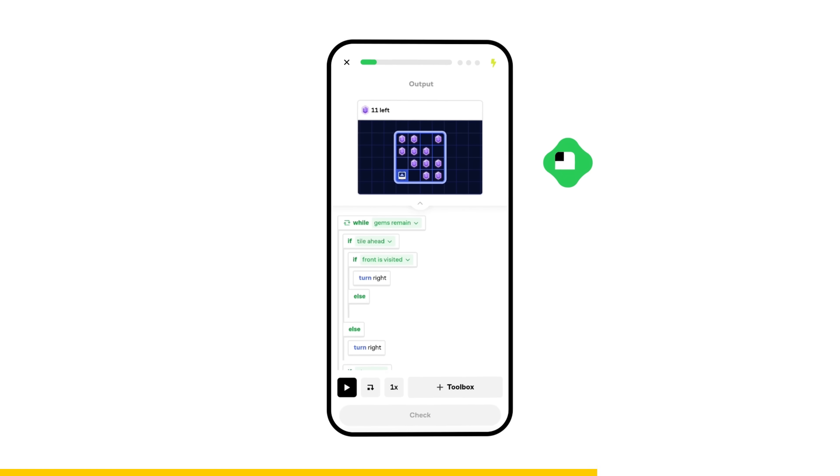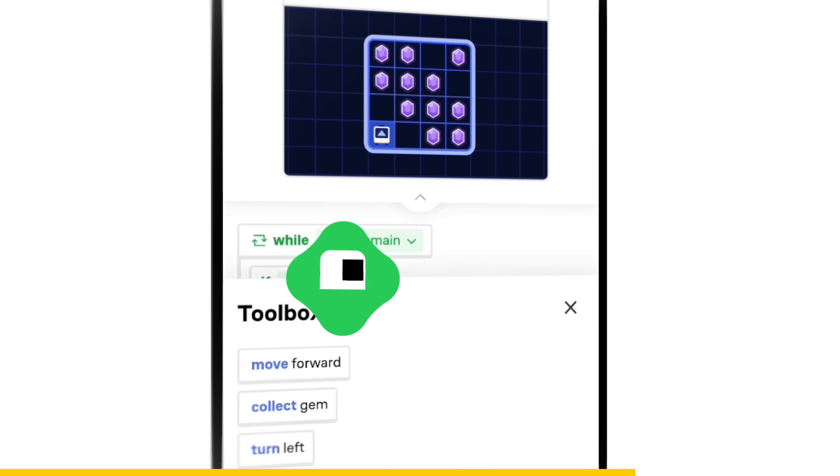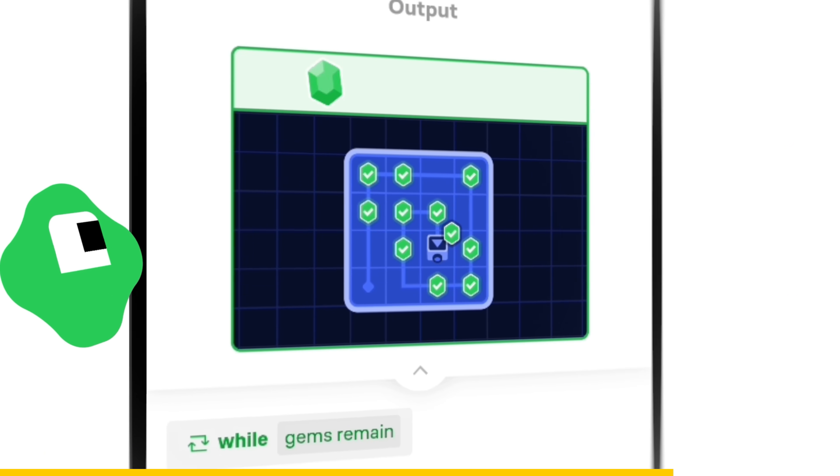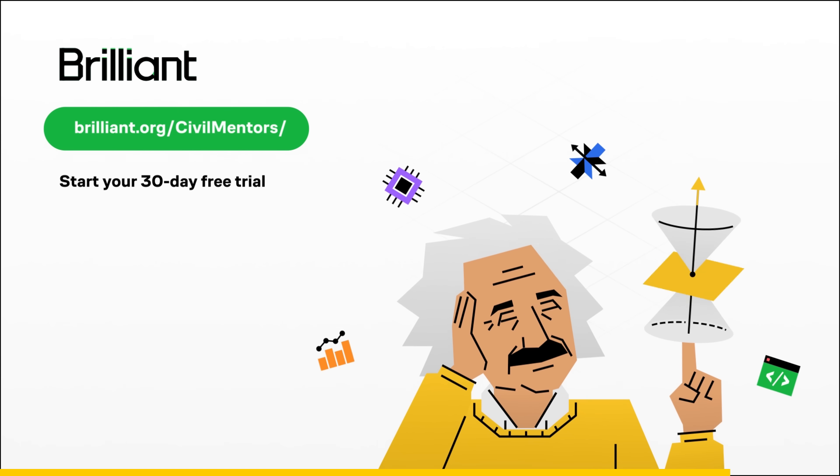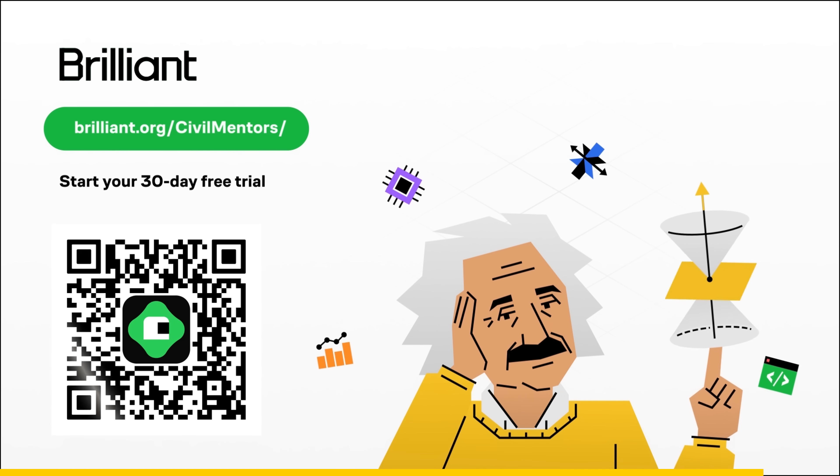It's the same kind of thinking that goes into the breakthroughs we're talking about in this video. And the best part? You can learn at your own pace. Even just a few minutes a day makes a difference. You can try Brilliant free for 30 days using my link and you'll also get 20% off a full year of premium. Just click the link in the description or scan the QR code on screen to get started.